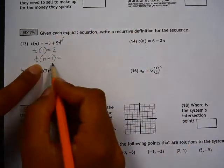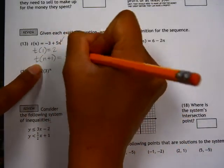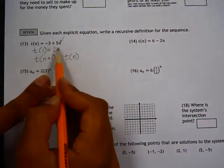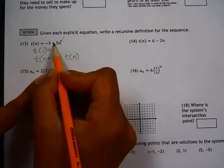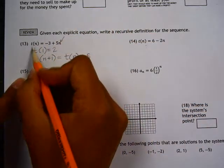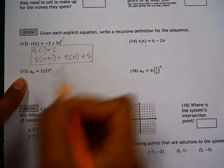So to find the next term in the sequence, t of n plus 1, we're going to take the term before it, t of n, and we can tell by the explicit equation that what's happening is that we're adding 5 over and over again. So plus 5. This is our recursive definition.